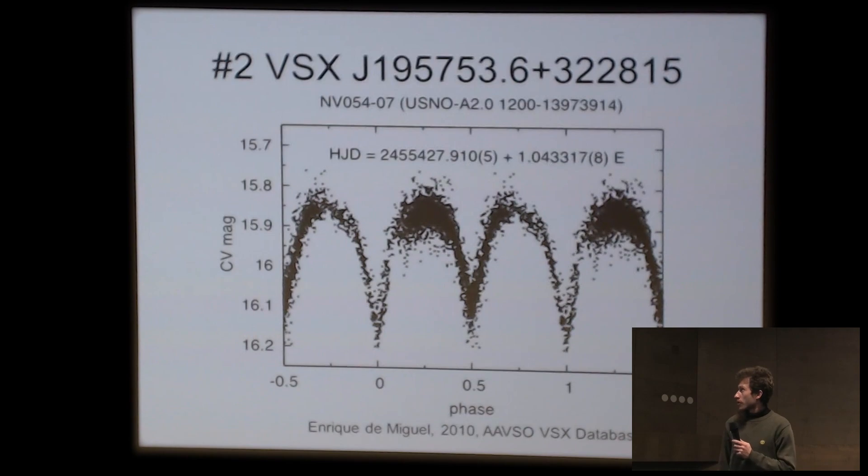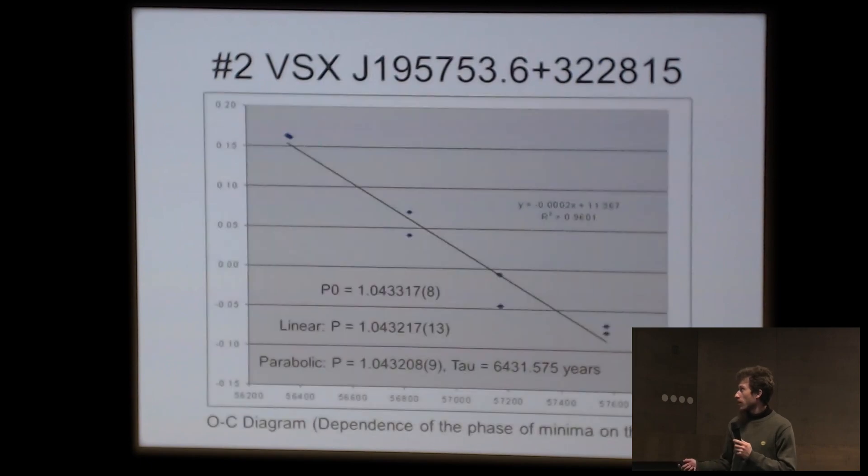The second object was discovered by Enrique de Miguel. You can determine the period by one time series, one light curve for some short period of time. But if you want higher precision you need a longer time base.